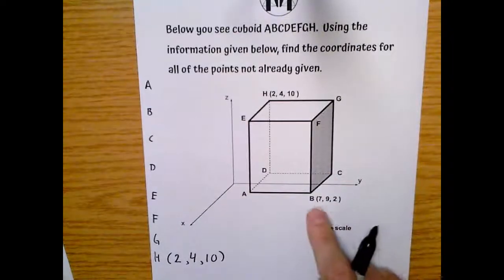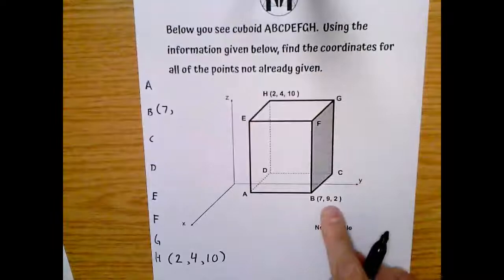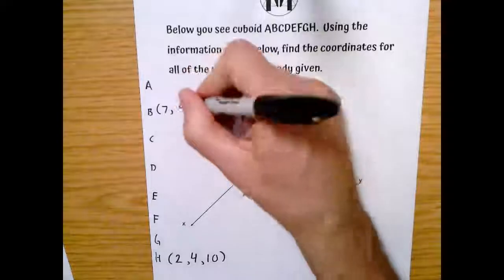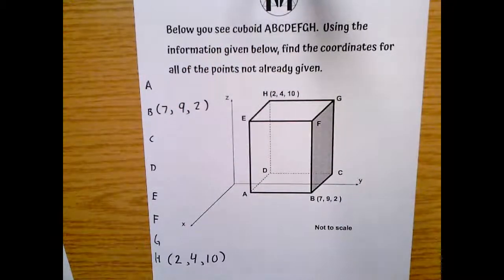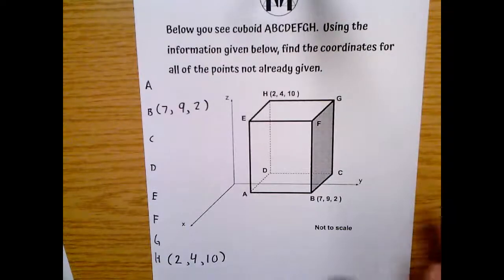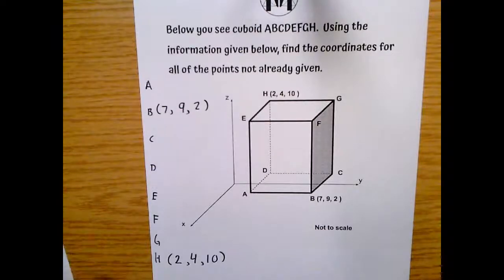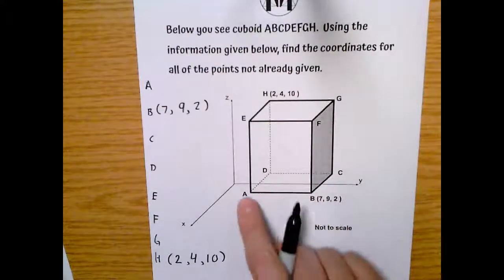And B, we also have the X is 7, the Y is 9, and the Z, up and down, is 2. Okay, so I really like to kind of tackle these just bit by bit, step by step.